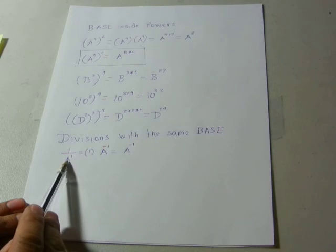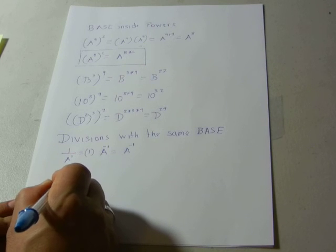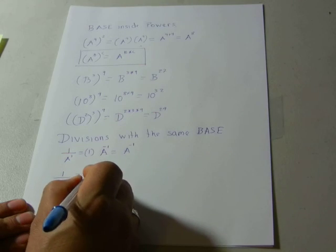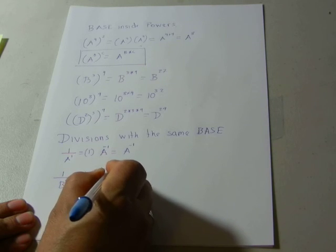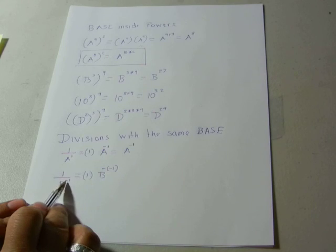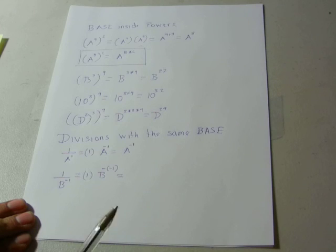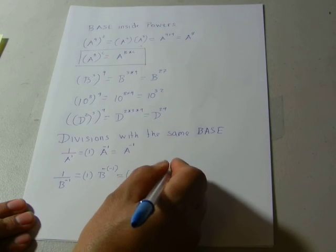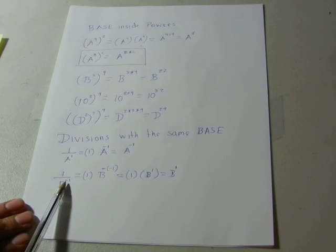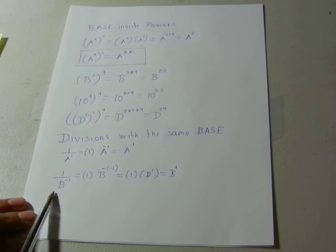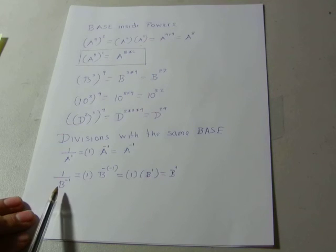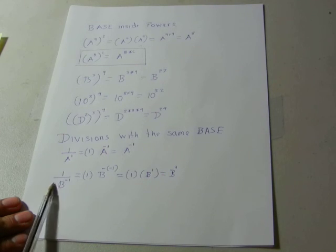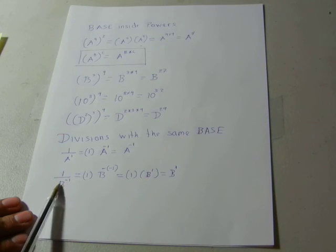This is what we call the inverse: whenever we have a negative exponent, it means the variable is in a positive power but in the opposite position. A negative exponent in the numerator means the actual value is in the denominator. What about B to the minus 1? If we want to move B to the numerator, we subtract — and negative times negative gives positive — so we get B to the 1 power, which is just B. A negative exponent in the denominator gives a positive exponent in the numerator.